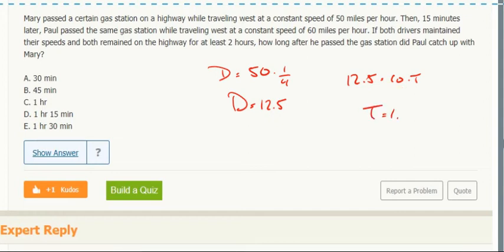So that is 1.25 hours, or 1 hour and 15 minutes. This two hours is not important. On the highway for at least two hours, that's just white noise. It means they're on there long enough to catch up, and this just means use these speeds. They maintain those speeds, just use those as their rates.